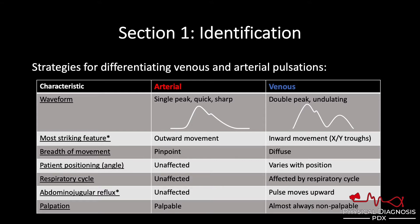The venous pulse is the exact opposite — the outward peaks are passive and hardly noticeable; it's the inward movements that are active and will catch your eye: the X and Y troughs. That's probably the best strategy I use most often — if I see an inward component, I know that's venous. The arterial pulse tends to be pinpoint, involving a small area of the neck, whereas the venous pulse is diffuse, involving a larger area. The arterial pulse is unaffected by patient position, the respiratory cycle, and abdominal pressure, because its location is purely anatomical — where those vessels course closest to the skin surface.